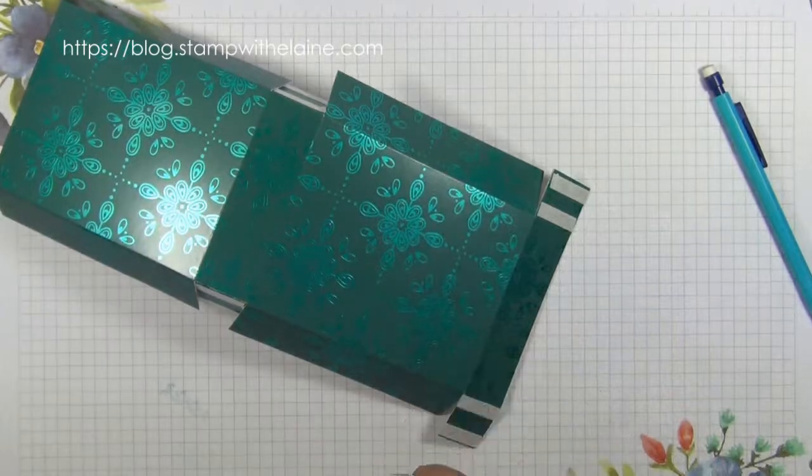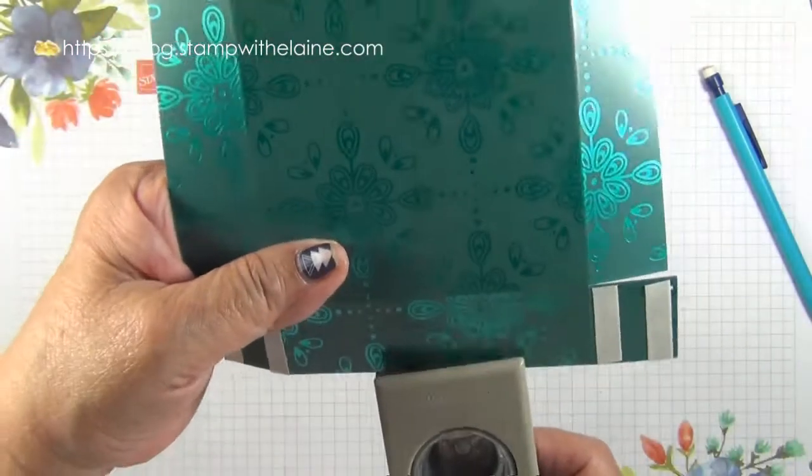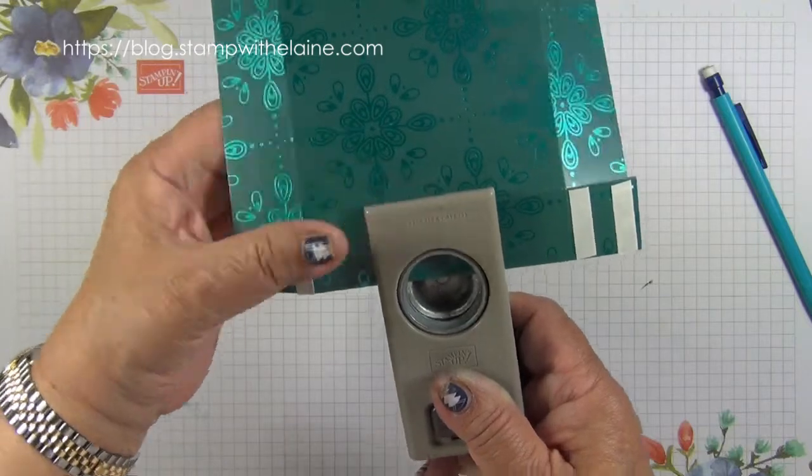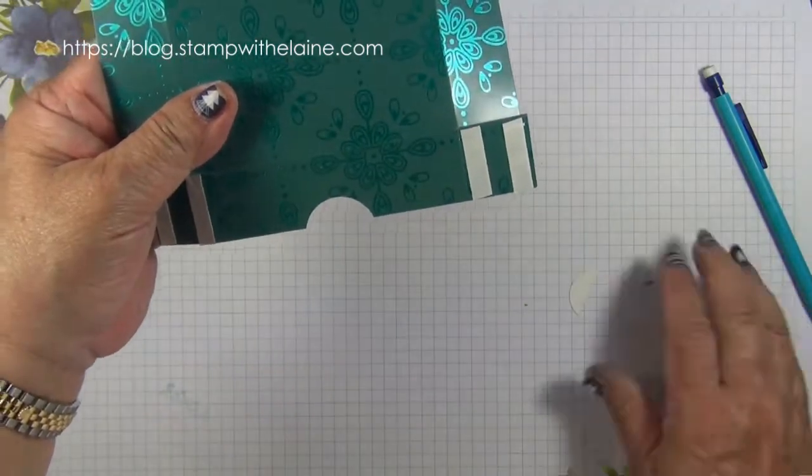Take your one inch circle punch and find the middle and punch a finger hole and then you'll know that's the front.